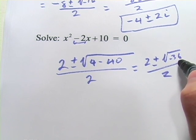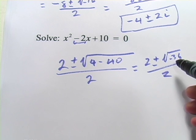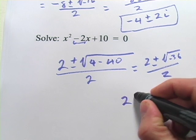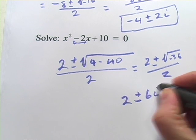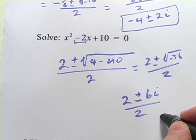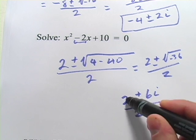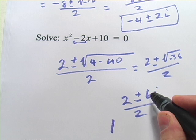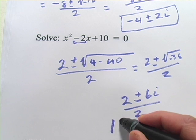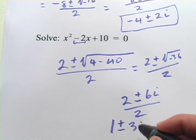And the square root of negative 36 is the square root of negative 1 times the square root of 36. Square root of negative 1 is i, so we have 2 plus or minus 6i over 2. And then we'll simplify the fraction. 2 divided by 2 is 1, and 6 divided by 2 is 3. So this is 1 plus or minus 3i.